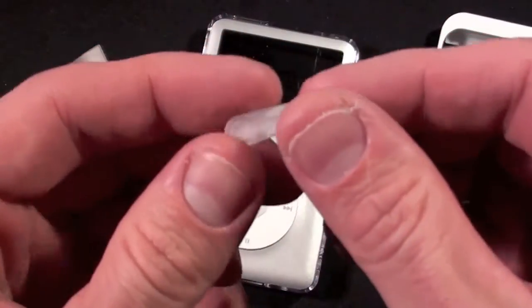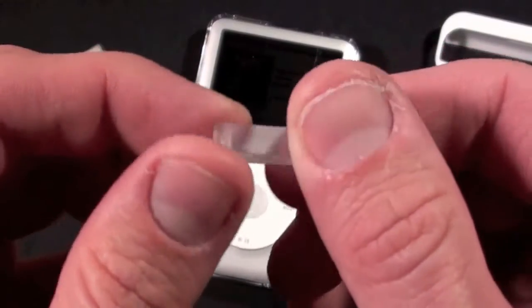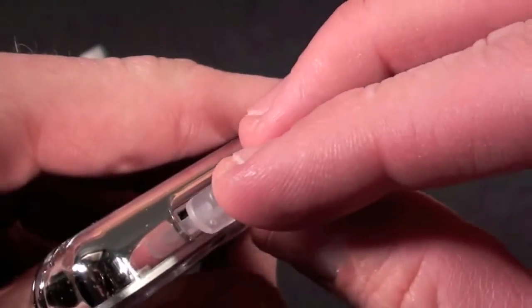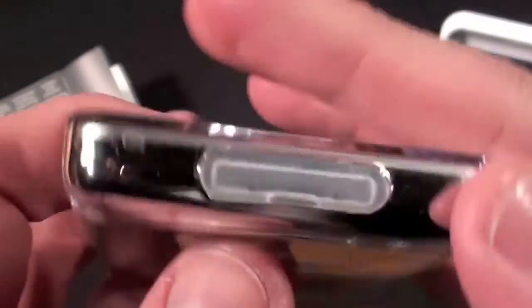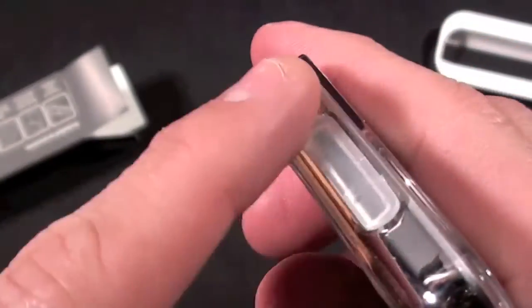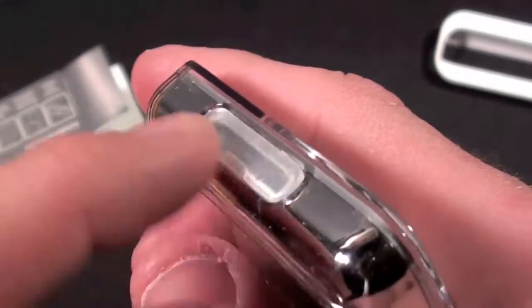We also have the dock connector protector, and this is a different material than what's used with the case, but it is a clear plastic. It does a very good job sealing the dock from dust and moisture. It doesn't quite match the case, but that's understandable because you probably wouldn't want to use a hard plastic plug in here.